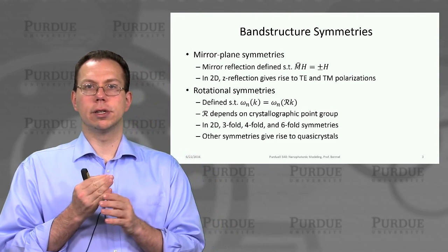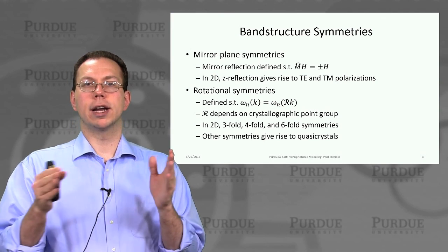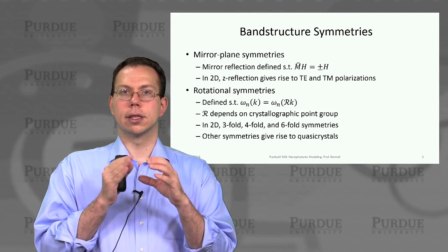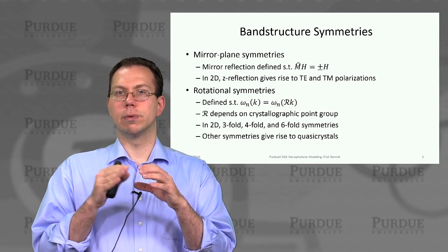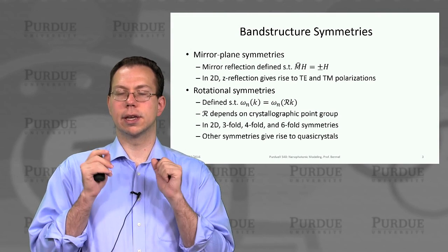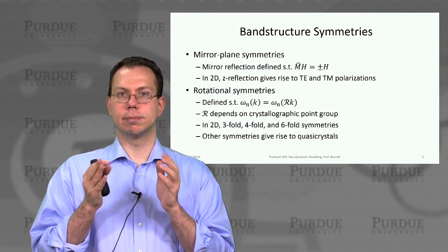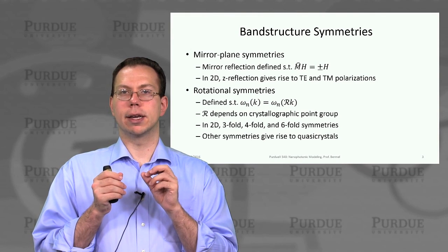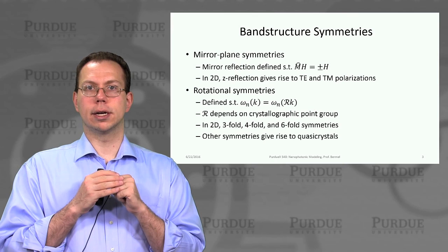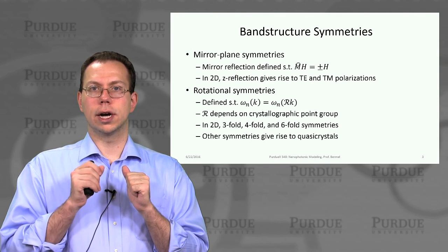Instead, you would have what's called a quasi-periodic system. For example, a soccer ball has a five-fold pattern resembling pentagons tiling the surface, but projected into real space you can't find one unit repeated at a uniform distance — it's well-ordered but not perfectly periodic. This gives rise to interesting phenomena, and there have been a number of papers on quasi-crystal band structures over the last decade. With that, thank you, and in the next lecture we'll discuss how to apply all these symmetries to more complex band structures.